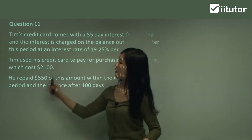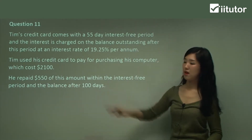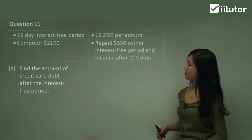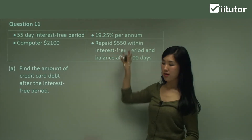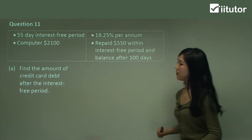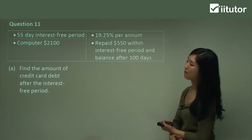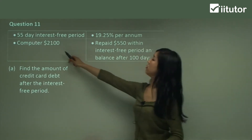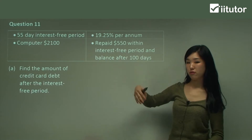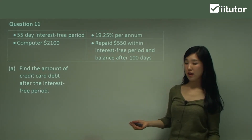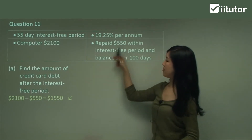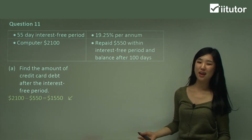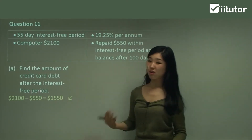He did pay a portion of it and the rest after 100 days. I've put the important parts up here so we'll refer to that as we do the question. Part A says: find the amount of credit card debt after the interest-free period. Well, that's the price of the computer he bought minus the $550 he repaid within the interest-free period. So what's the amount of debt remaining? Simply that minus the amount paid — so $1,550 is left for Tim to pay. Unfortunately, on this amount interest is going to be charged.